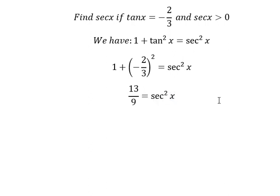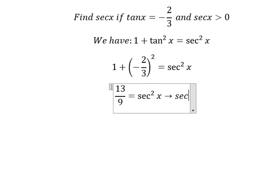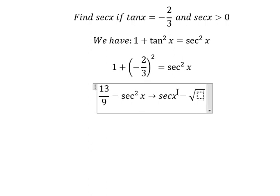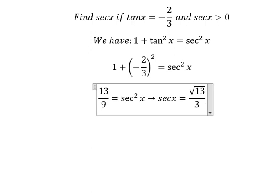So we put the square root for both sides, but we can accept only the positive number. So in this situation we have secant of x equals to the square root of 13 over 3. This is the end.